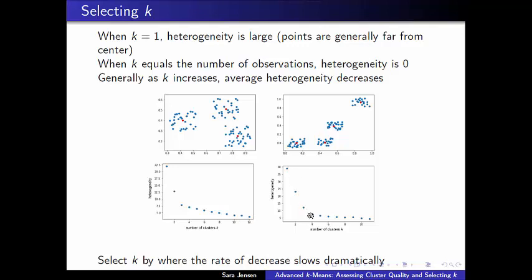The heterogeneity decreases very quickly at first, then flattens out and decreases rather slowly. For both examples, you can see that precisely where the heterogeneity stops decreasing quickly and starts to flatten out is where the correct number of clusters is. When we stop seeing vast improvements in heterogeneity as k increases, that's an indication that our data is overfit and we don't need that many cluster centers. This ad hoc method — watching where heterogeneity stops decreasing quickly — is how we identify the appropriate k value.